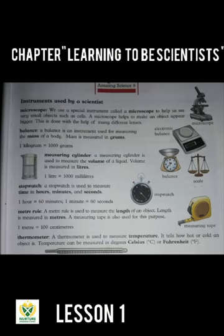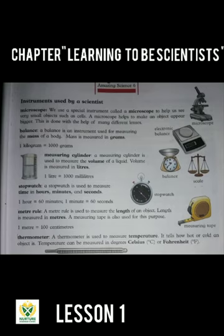These are all instruments which scientists use. First, we have the microscope. We use a special instrument called a microscope to help us see very small objects, such as cells of a leaf or plant. A microscope helps to make an object appear bigger, and we can see little objects more clearly. This is done with the help of many different lenses.